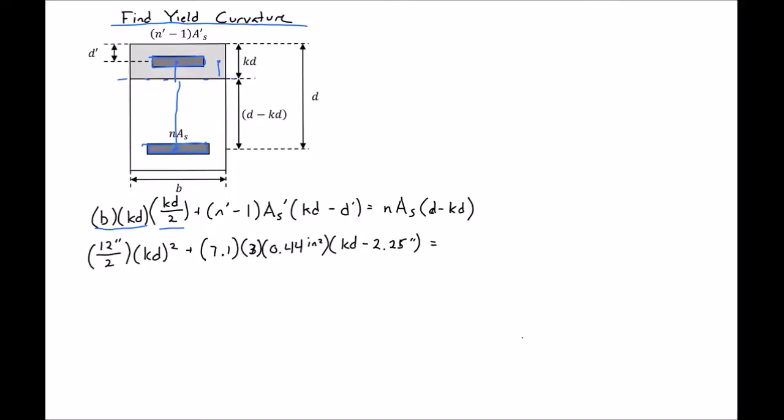And then this is all equal to our N, which is 8.1, times AS, which we had 3 number 8 bars, and then times D, which is 17.63 minus KD. So now we have one unknown, which is KD, so we can solve for our KD.